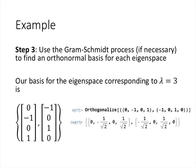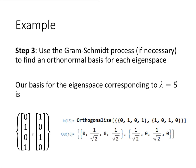Step 3 is to use the Gram-Schmidt process, if necessary, to find an orthonormal basis for each eigenspace. It is necessary here because the bases we found are not orthonormal — they happen to be orthogonal, with dot products equal to zero, but the vectors are not unit vectors. We use the Orthogonalize command in Mathematica, entering the basis we found for each eigenspace. This gives an orthonormal basis for the eigenspace corresponding to lambda equals 3, and then we do the same for lambda equals 5. Together we have four vectors forming an orthonormal basis for all of R^4.